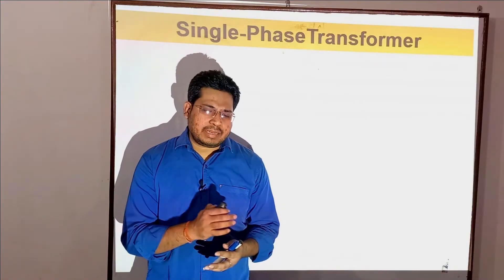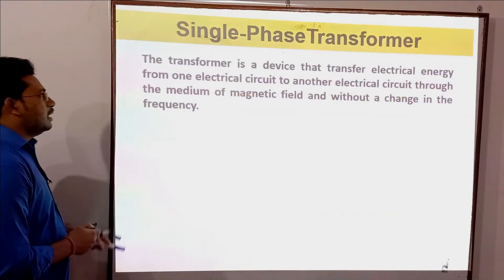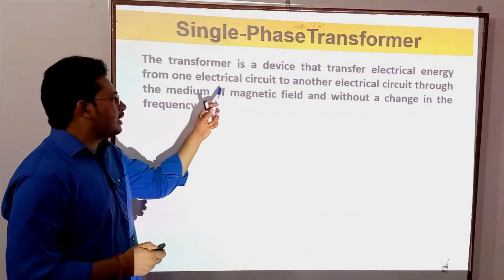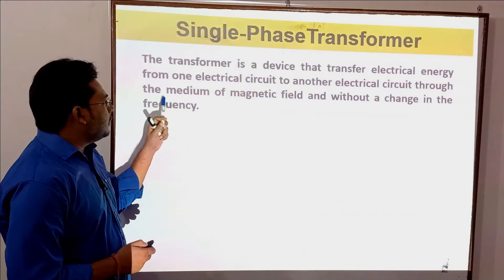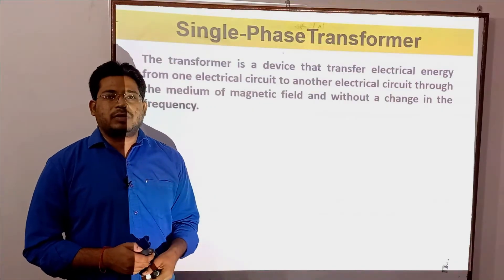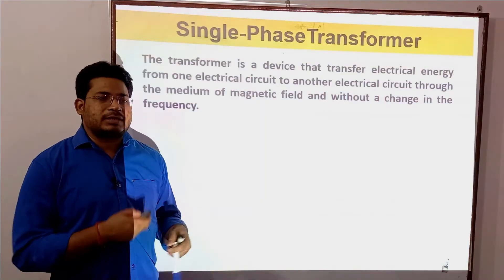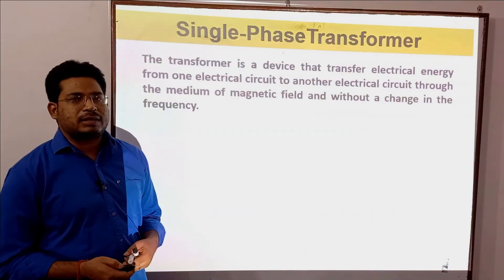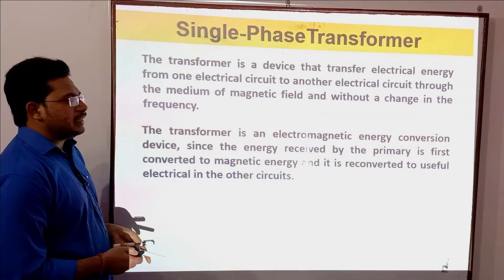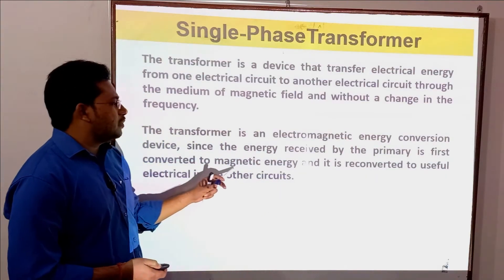A more complete definition: a transformer is a device that transfers electrical energy from one electrical circuit to another electrical circuit through the medium of a magnetic field and without a change in frequency. In a transformer, there is a primary winding and a secondary winding. It is an electromagnetic energy conversion device — energy received by the primary is first converted to magnetic energy, then re-converted to useful electrical energy in the secondary circuit.